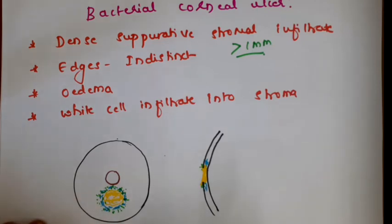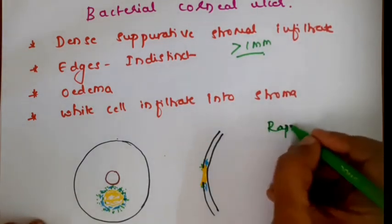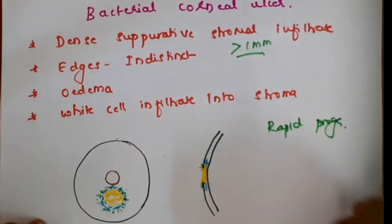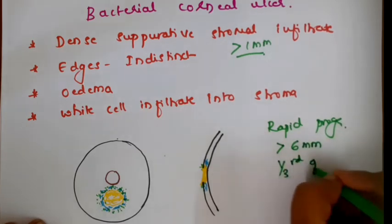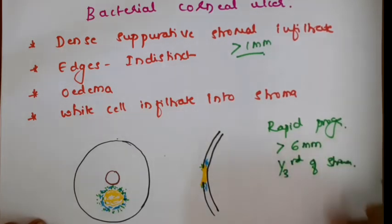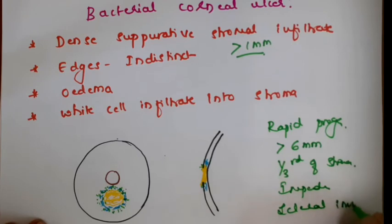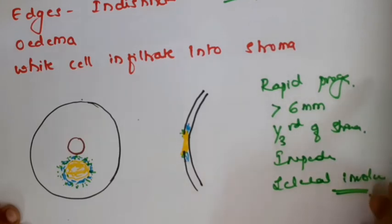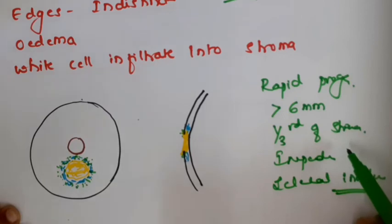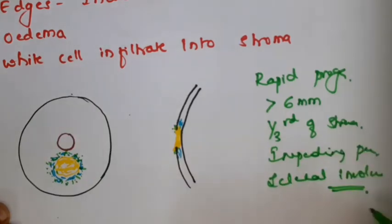A bacterial corneal ulcer is considered very severe if there is rapid progression of the ulcer, if the infiltration is more than six millimeters in size, if the depth of involvement is more than one third of the stroma, if there is impending perforation, or if there is scleral involvement. All these indicate a rapidly progressive severe corneal ulcer that needs aggressive treatment along with systemic antibiotics.